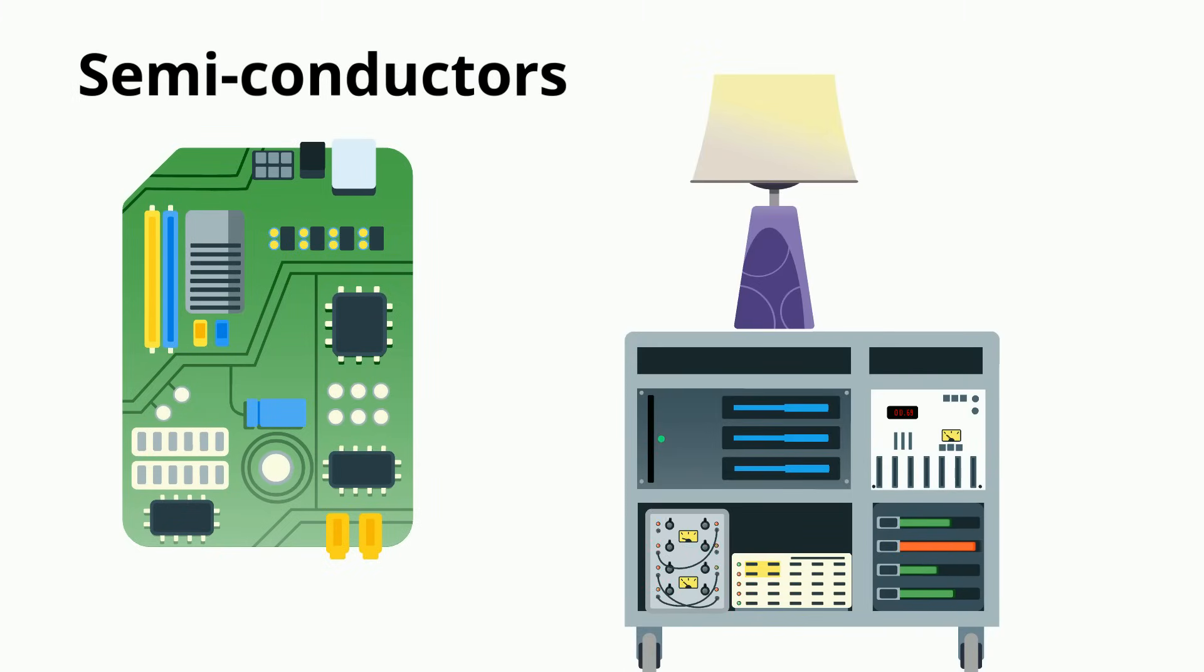They are widely used in technology. For example, silicon is used in computer chips and germanium is used in lights and solar panels.